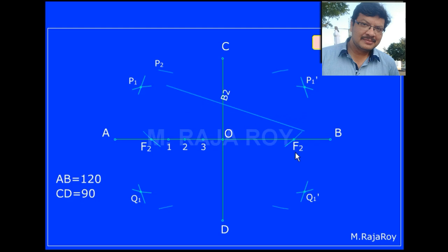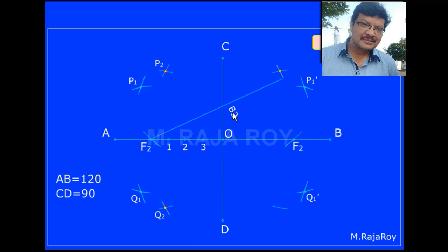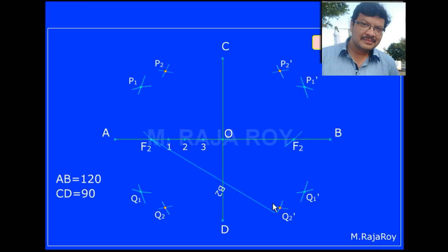With B2 radius and F1 as center, draw an arc as shown. This intersects with the previous arc and we can get P2 as shown. Draw an arc on the bottom side — that will intersect and we can get Q2 as shown. Now with the same radius B2, changing the center to F1, draw an arc and you can get P2 dash. If you draw an arc on the bottom side, we can automatically get Q2 dash.